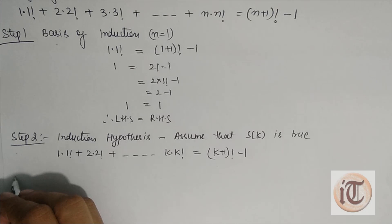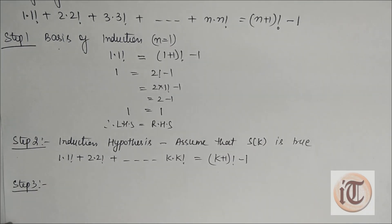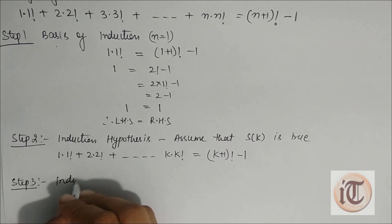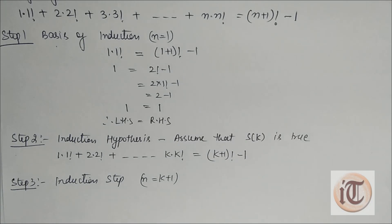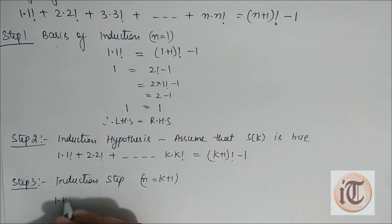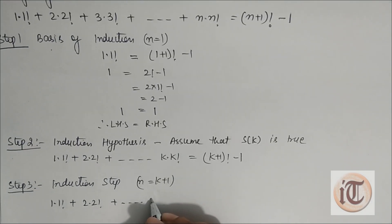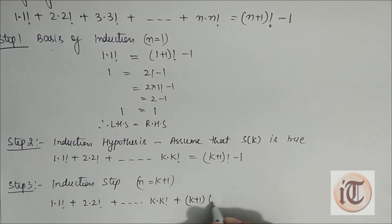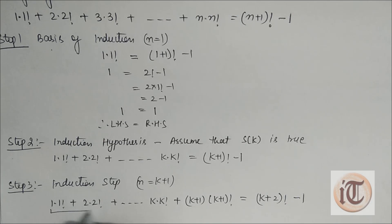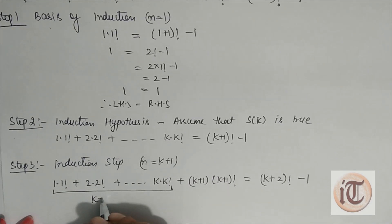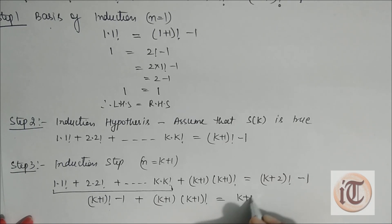Step 3 is the induction step. We put n = K+1 in the main statement. This becomes 1·1! + 2·2! + ... + K·K! + (K+1)·(K+1)! = (K+2)! - 1. Now we substitute the value from Step 2: (K+1)! - 1 + (K+1)·(K+1)! = (K+2)! - 1.